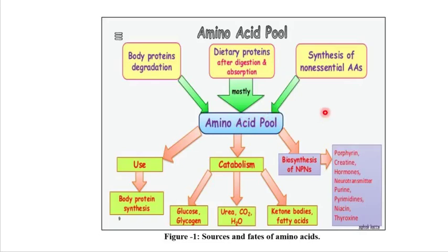These free amino acids are found in body tissues and blood, ready to enter metabolic pathways when needed. Amino acids from the pool can be catabolized to urea, CO2, and H2O. They can be converted to glucose and then glycogen when needed. They are also used for resynthesis of body protein and biosynthesis of non-protein nitrogenous compounds such as hormones, creatine, porphyrin, neurotransmitters, purines, and nucleic acids — all synthesized from amino acids.